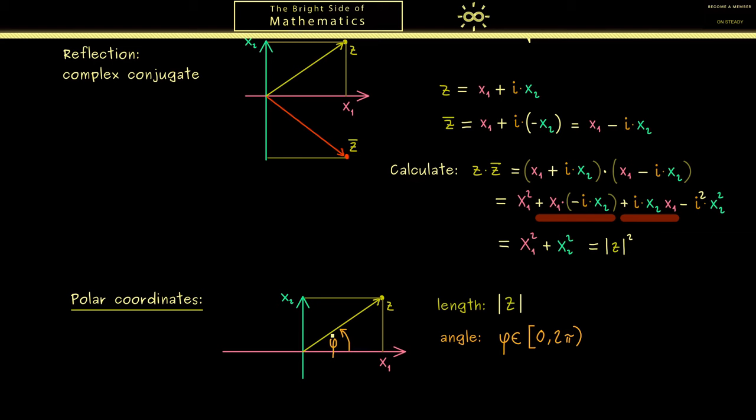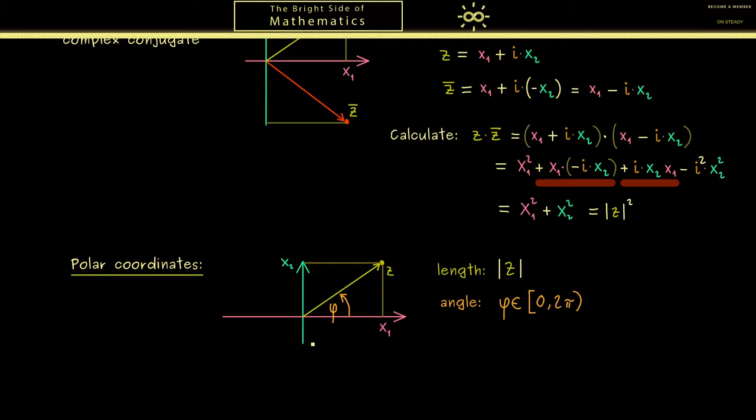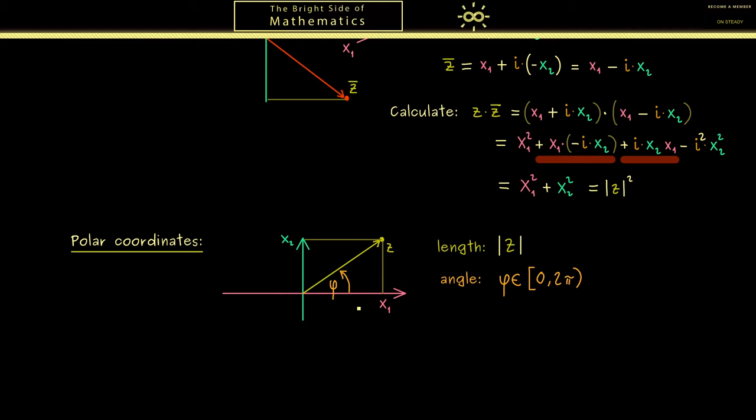And with this information we are also able to calculate the angle. This also works in this right angle triangle. Indeed what we can use is the arc tangent. The inverse function of the tangent. So more concretely we take the side on the y-axis. So x₂. And divide it by the side of the x-axis. So x₁.